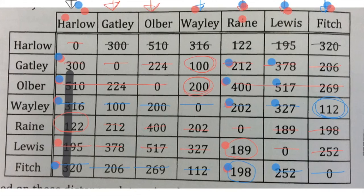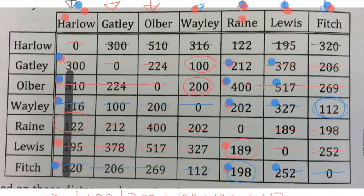So our minimum spanning tree is 122 plus 100 plus 200 plus 189 plus 198 plus 112. When you add these ones together, that gives you the minimum spanning tree. I found that so difficult for some reason — but it's actually not hard.